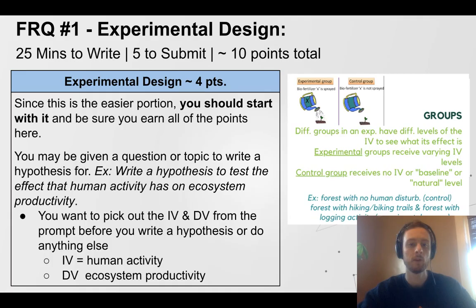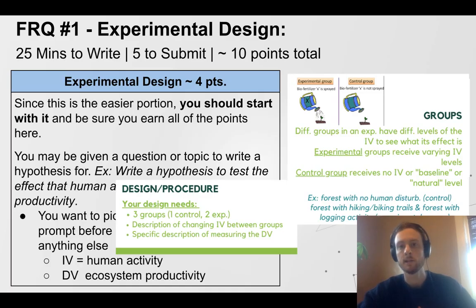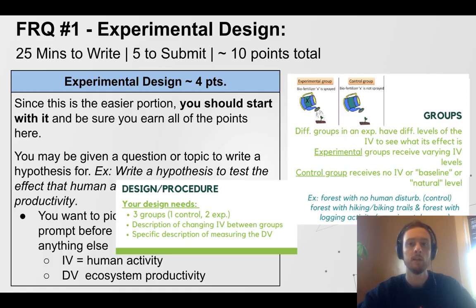In our ecosystem disturbance example, forests with no human disturbance would be the control group. Then we'd have a forest with hiking and biking — a medium level of disturbance — and a forest with logging, representing heavy human disturbance. Those are our three groups. If you're designing a procedure, you need three groups, describe how the IV is changing across them, and give a specific description of how the DV is measured. For example: we'll measure primary productivity in grams of carbon biomass growth per meter squared per year.